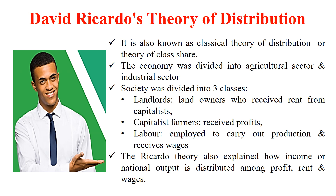It is also known as the classical theory of distribution or the theory of class share. Ricardo divided the economy into the agriculture sector and the industrial sector, giving more importance to the agriculture sector. He further divided society into three classes. The landlords were the landowners who gave land on lease to the capitalist farmers, and in return they received the rent.